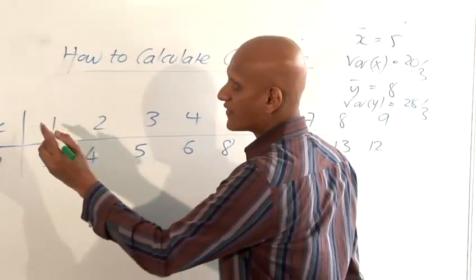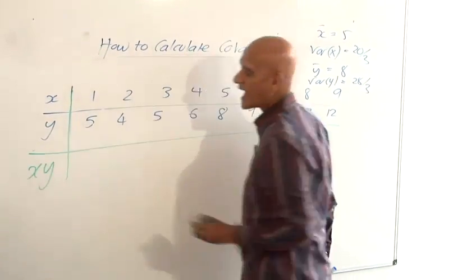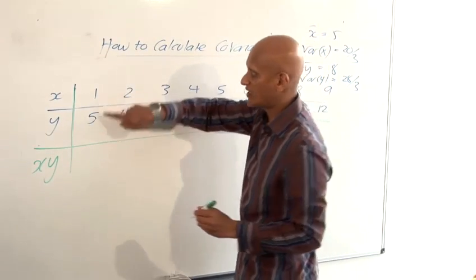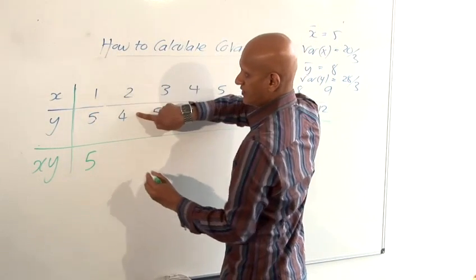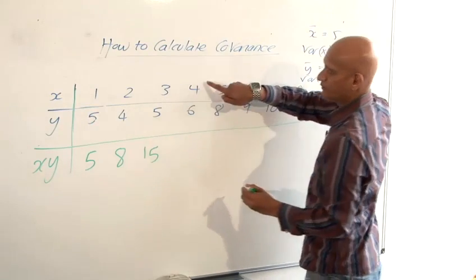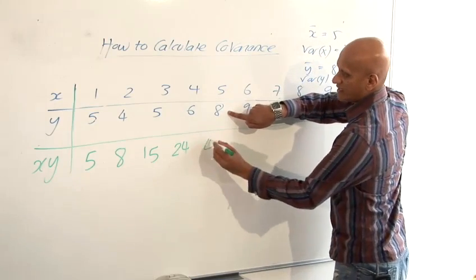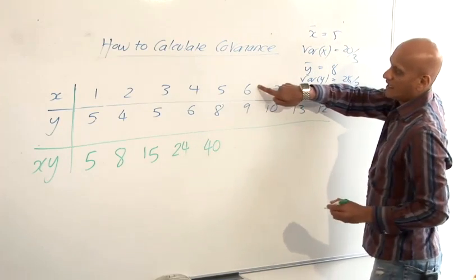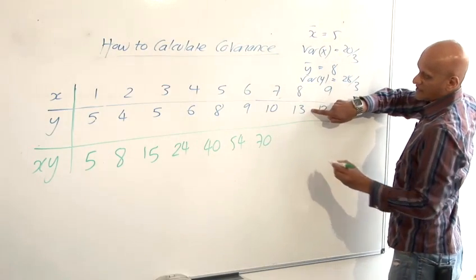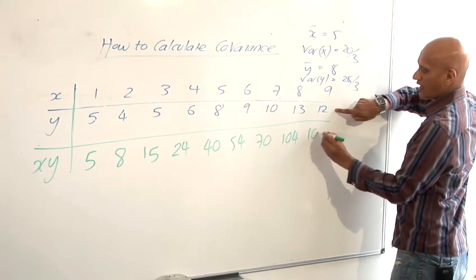Okay so now to work out the covariance we're going to add another row onto this table which is going to be called XY and to work that out we're going to multiply the X values by the Y values. So 1 times 5 is 5, 2 times 4 is 8, 3 lots of 5 is 15, 4 lots of 6 is 24, 5 lots of 8 is 40, 6 times 9 is 54, then 70, 8 times 13 is 104 and 9 times 12 is 108.